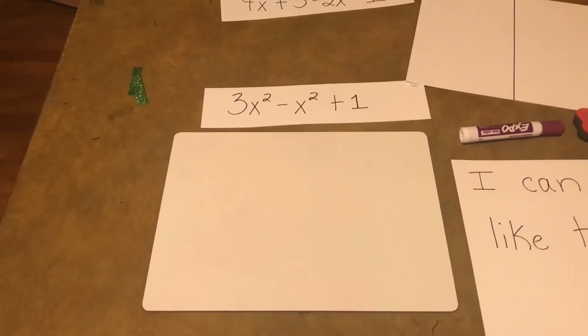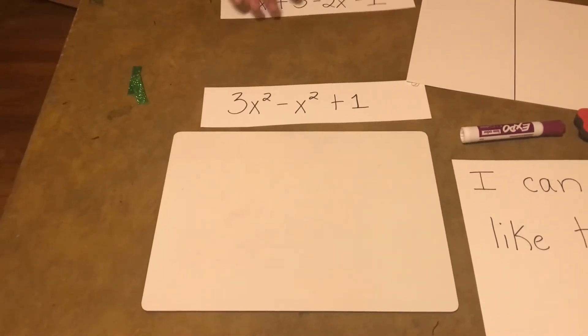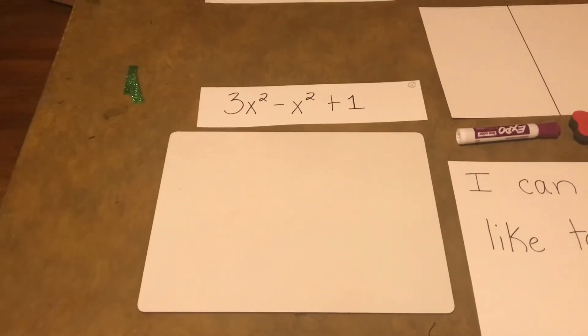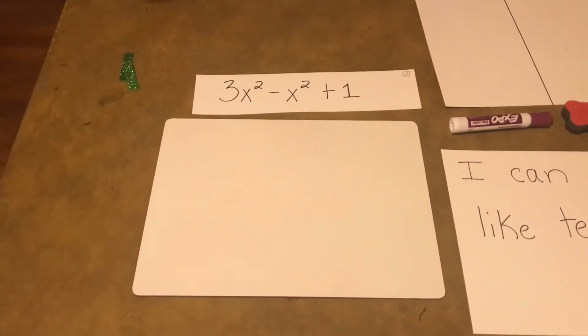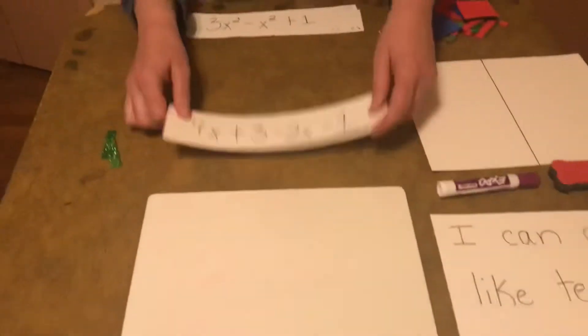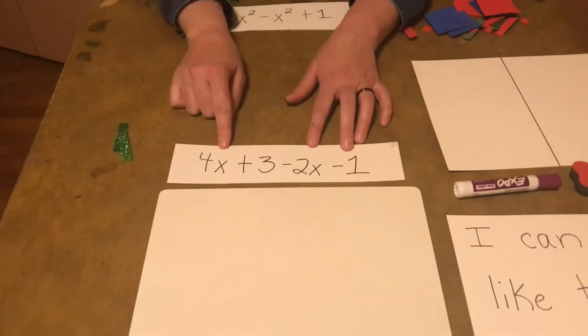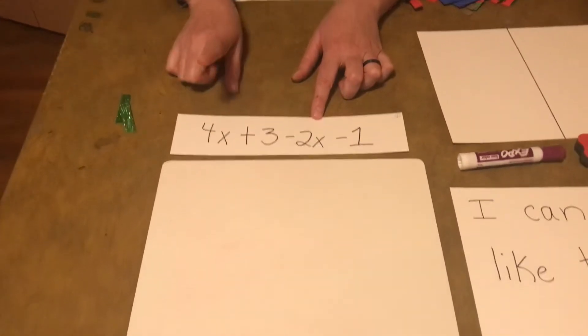All right, we've done this with tools, our algebra tiles, and we've done it with pictures. Now let's try to take it to numbers, a little more abstract. Let's go back to this one right here. So when we look at that, hopefully you're starting to see some terms you can combine.